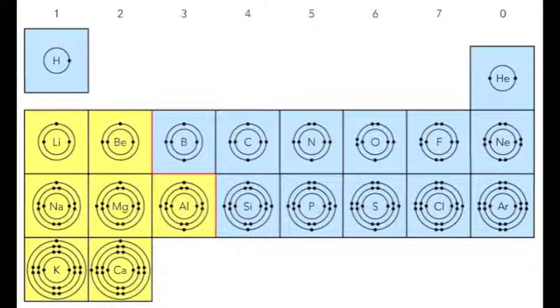This picture shows the electronic configurations for the first 20 elements in the periodic table, from hydrogen to calcium.